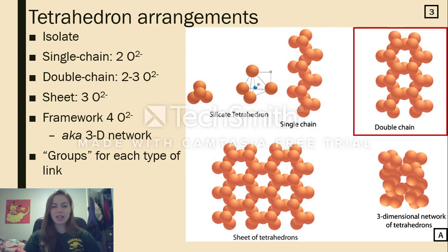The double chain is very similar to the single chain except now on every other silicon oxygen tetrahedron, three oxygens are shared instead of two. So it'll alternate two, three, two, three, etc. This creates a wider double chain feature.